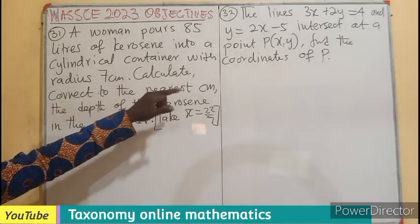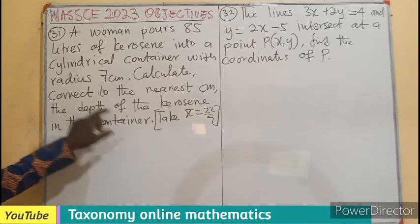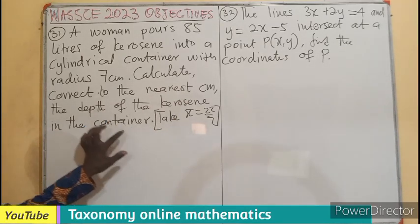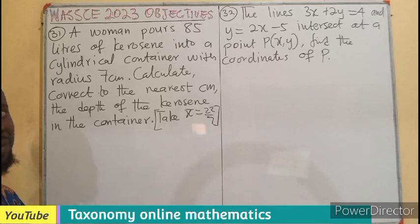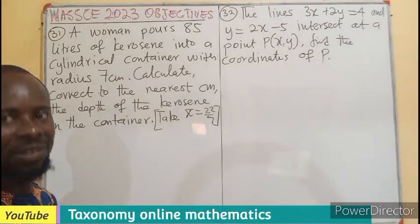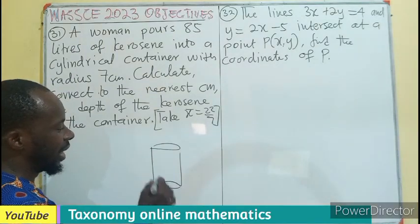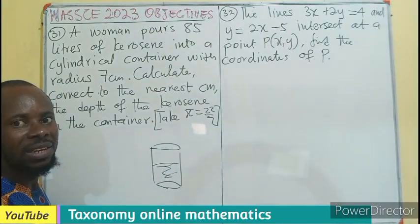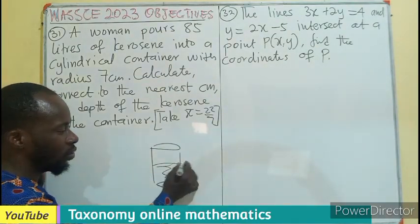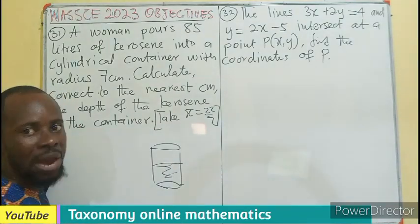Calculate correct to the nearest cm the depth of the kerosene in the container. The depth of the kerosene is referring to the height. Because if you have a cylindrical container and there is kerosene inside, the depth of the kerosene is going to be the height of the kerosene.